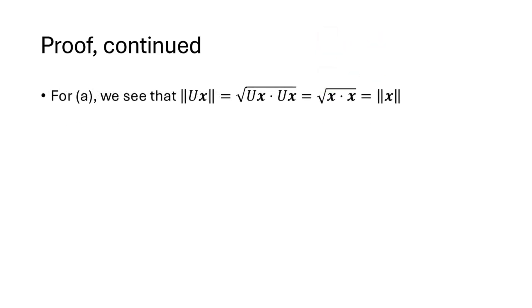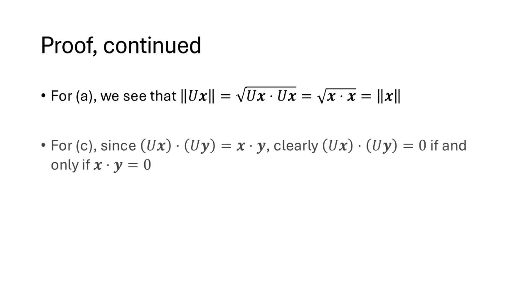For part a, the length of Ux is the square root of Ux dot Ux. By part b, Ux dot Ux equals x dot x, and the square root of x dot x is the length of x. For part c, since Ux dot Uy equals x dot y, the left-hand side equals zero if and only if the right-hand side equals zero.